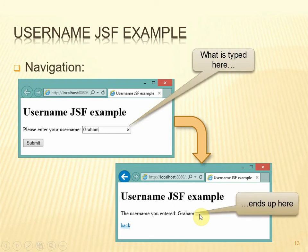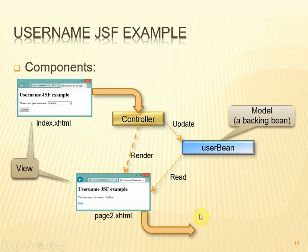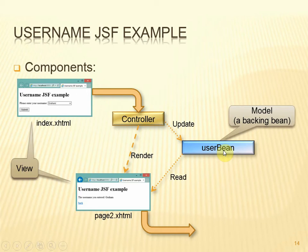We immediately have the concept of two separate views with a transition between them. The transition involves server-side technology: the first view, when the button is clicked, submits its form data to the controller. Remember, we have no control over the controller — it's provided by the JSF framework. That controller updates the model component, known as a backing bean — called UserBean in this case — so the form data ends up stored in the UserBean. The controller then invokes the next view, which retrieves the information from the UserBean and outputs it.